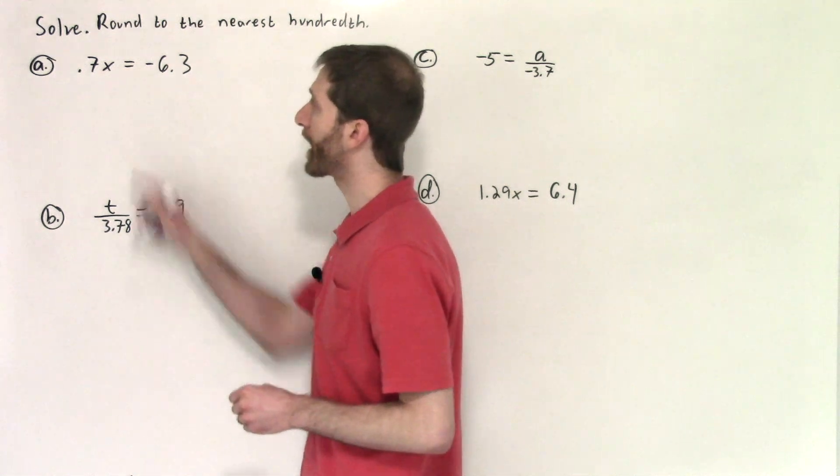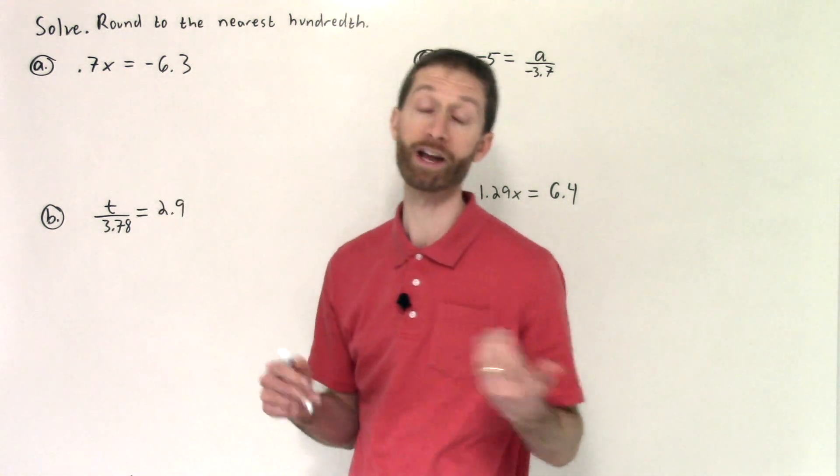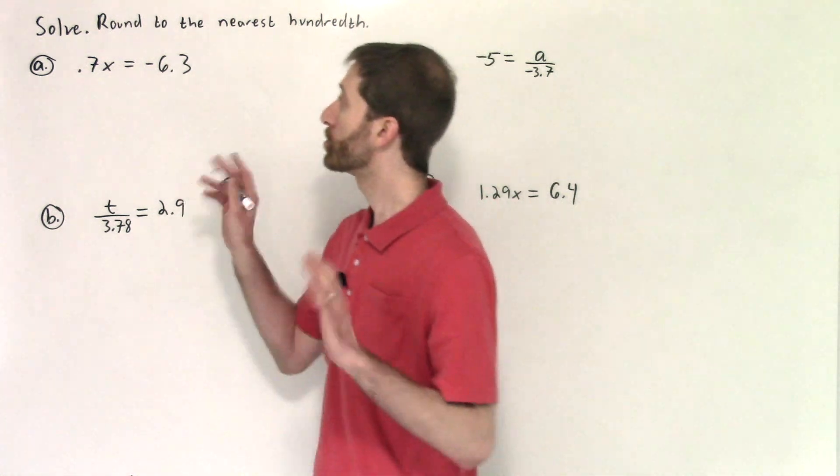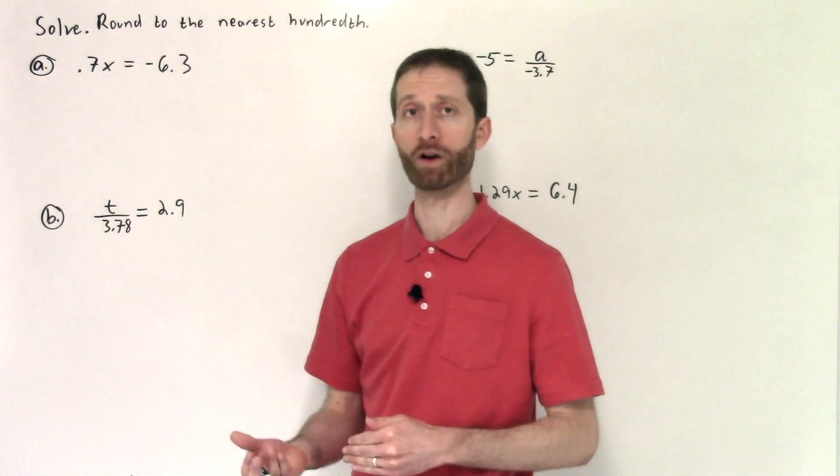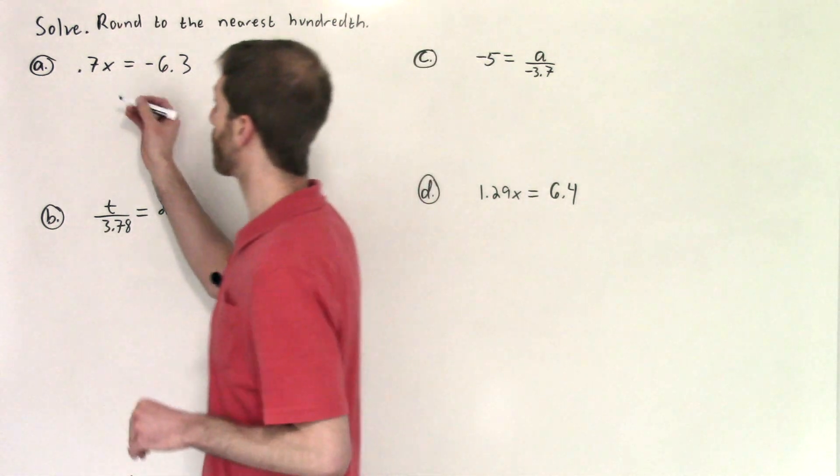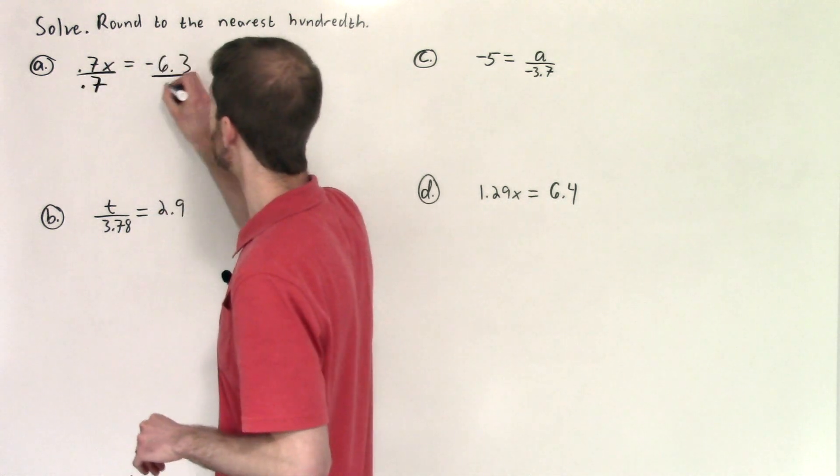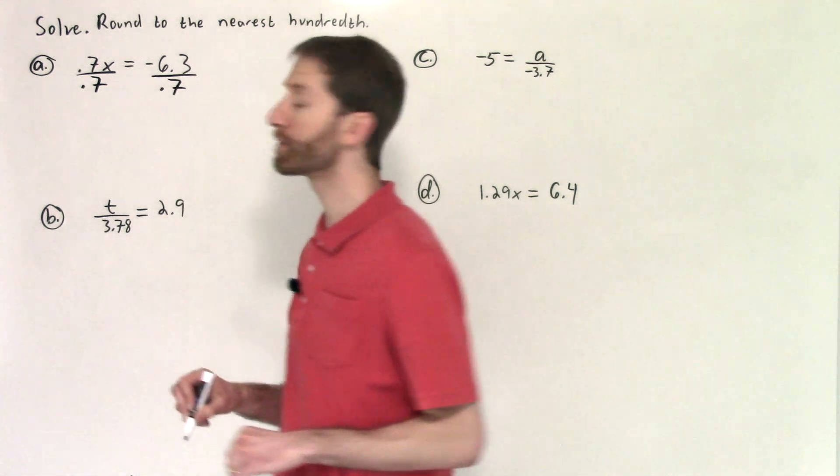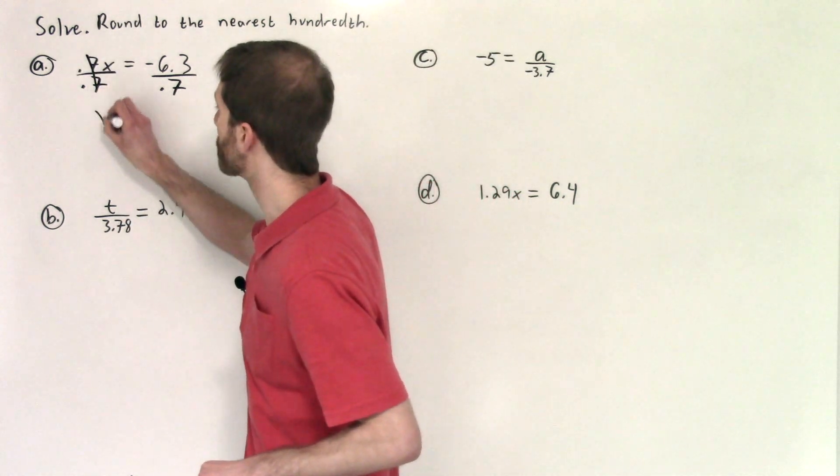Looking at A, we've got a number 0.7 times x equals negative 6.3. Don't worry about the fact that it's a decimal. You are multiplying by 0.7 by the variable, so you need to undo the multiplication by dividing. That's all we're focused on. So we undo by dividing by 0.7 on both sides to maintain equality. Once we've divided by 0.7, we notice that we've isolated x. That's our goal. So we've accomplished that.